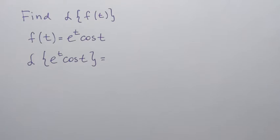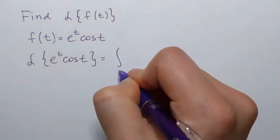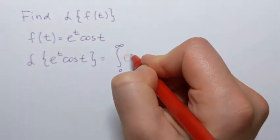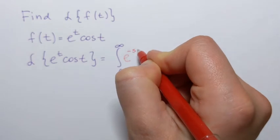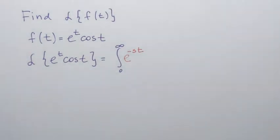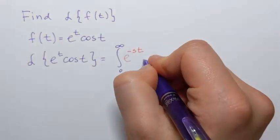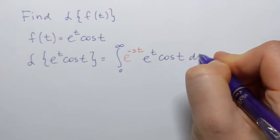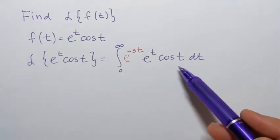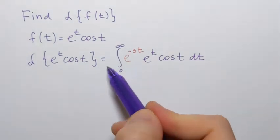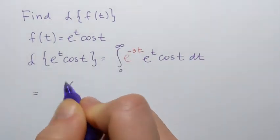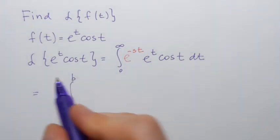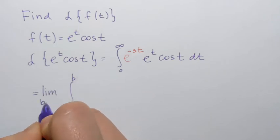By definition, the Laplace transform is an improper integral that goes from 0 to infinity. In that integral we will always have a factor of e to the power negative s·t, and that factor will multiply by the function we're given — so times e to the power t times cosine of t, dt. The variable of integration always matches the variable of our function. To evaluate this improper integral, we change the limit infinity to a variable B, so it goes from 0 to B, and then we apply the limit as B approaches infinity.